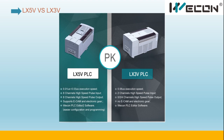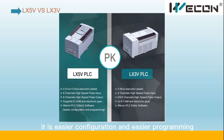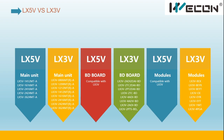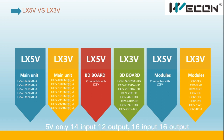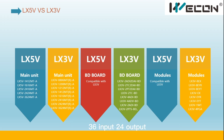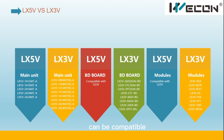The standard LX3e PLC has no E-cam or E-gear support, but on the LX5e they are fully supported. The software is also different — LX5e uses PLC Editor 2, which offers easier configuration and programming. Regarding main units, LX5e has five options: 14-input/12-output, 16-input/16-output, 24-input/16-output, 24-input/16-output, and 24-input/24-output. LX5e PLC is fully compatible with LX3e PLC.